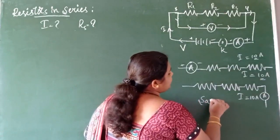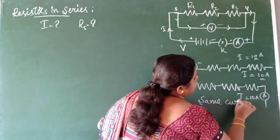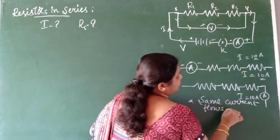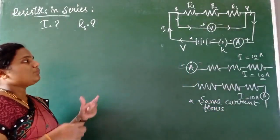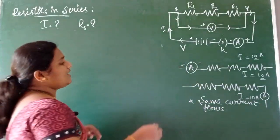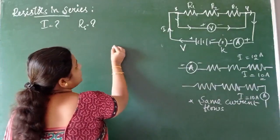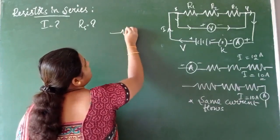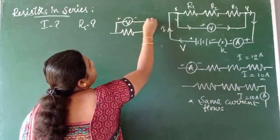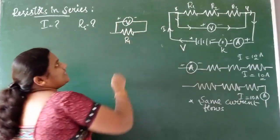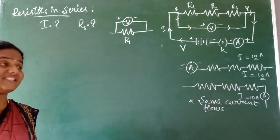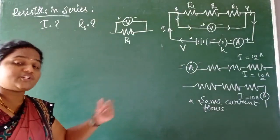So the current value is the same and independent of position. We conclude that the same current flows through all resistors in a series combination. Now let us find the potential difference. If a voltmeter is connected across the first resistor, it gives potential difference V1.